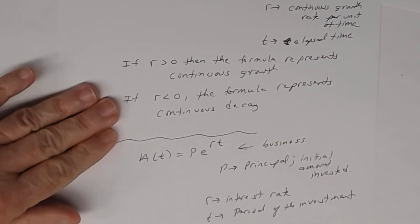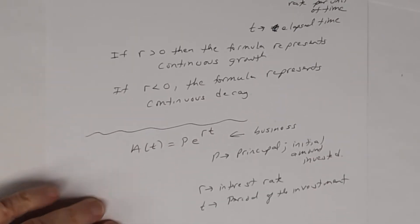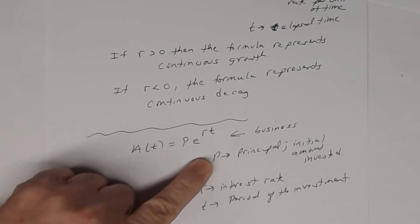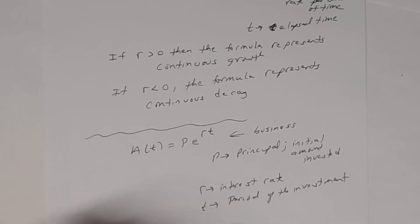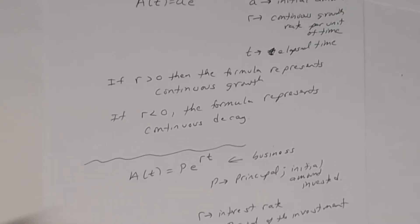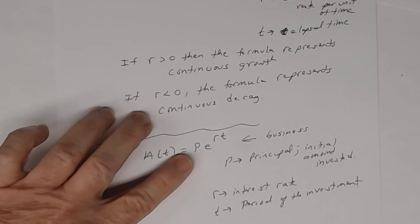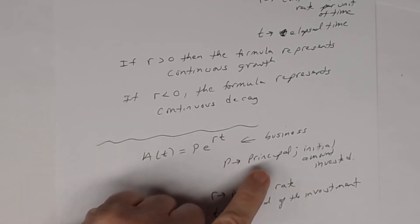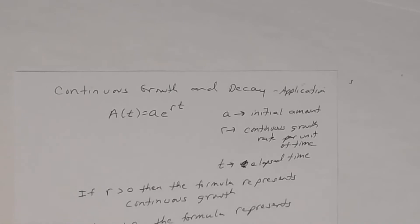When we talk about money, instead of using the letter A we're going to use the letter P, where P stands for the principal — meaning the initial amount invested. Everything else basically stays the same: r would be the interest rate and t would be the period or term of the investment. In business we use the word 'principal' instead of just 'amount.'